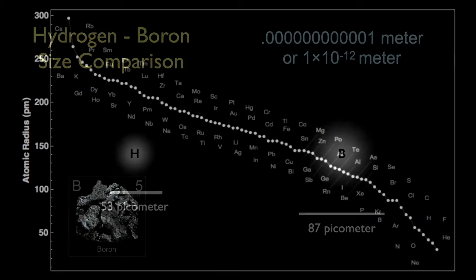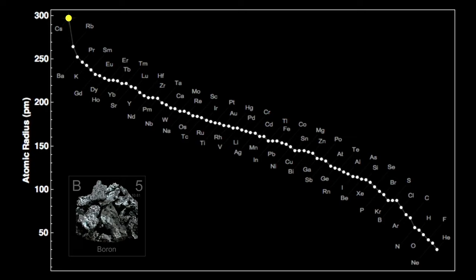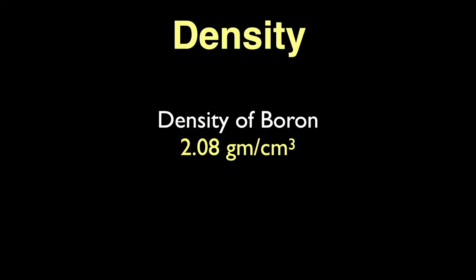Here are atom sizes sorted from largest — cesium on the top left — to smallest — helium on the bottom right. Boron is the tenth smallest atom, mainly because of its simplicity. Notice that many of the early elements in the periodic table are found in the lower right of this chart, except maybe for the alkali metals, all of which have large atoms.